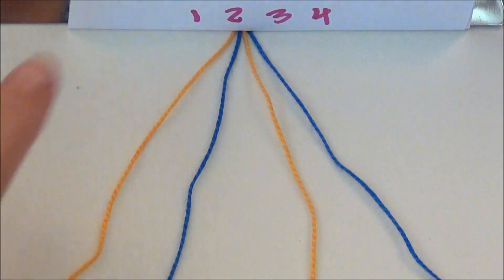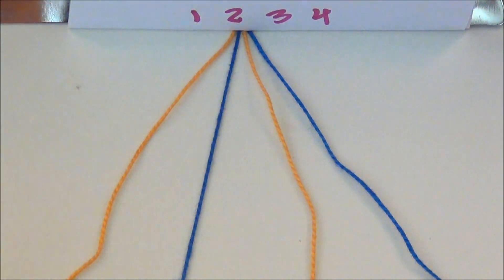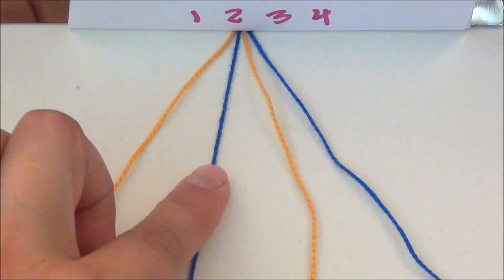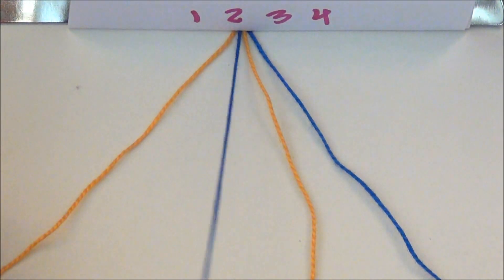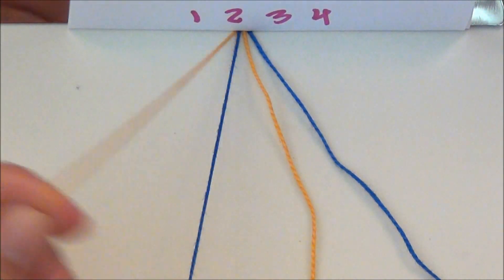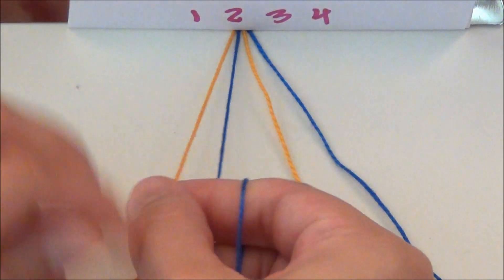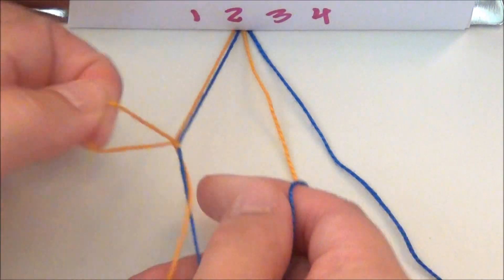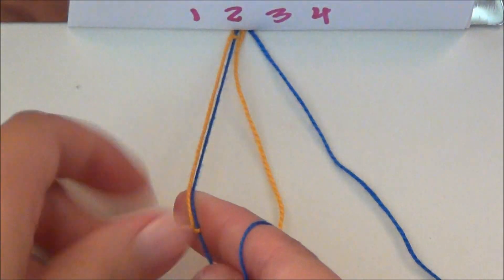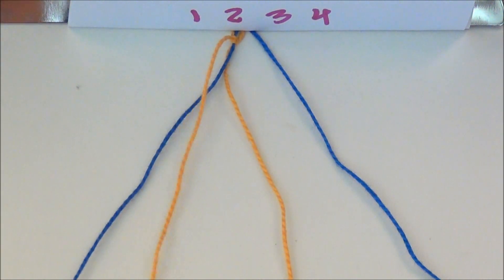When you're working left to right, your left string is going to tie onto the one directly next to it. For this one, number two is going to be the base string and number one is going to tie onto number two. We're doing forward knots since it's a candy stripe. So tie one forward knot onto number two.